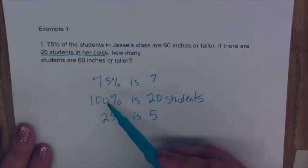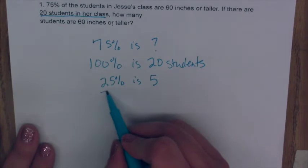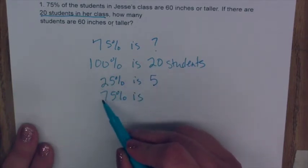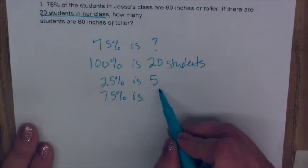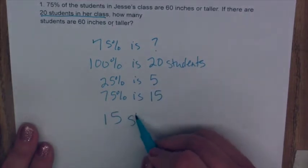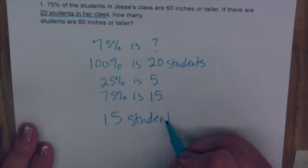So then to get from 25 to 75 percent I would need 3 of those. So I would do 5 times 3 and then 5 times 3 and get 15. So my final answer would be 15 students.